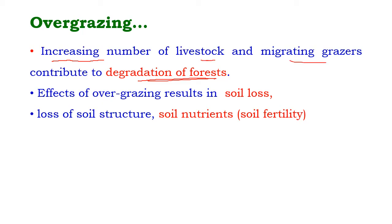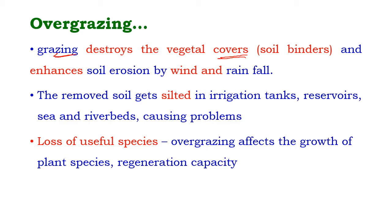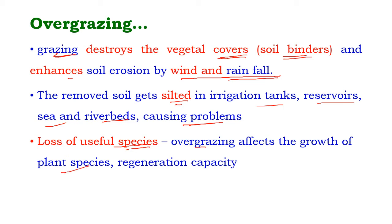The effects of overgrazing result in soil loss, loss of soil structure, and loss of soil nutrients — the fertility of the soil is lost. Grazing destroys vegetation cover, which acts as a soil binder and protects soil from erosion. Grazing also enhances soil erosion by wind and rainfall, and removed soil gets silted in irrigation tanks, reservoirs, and river beds. Overgrazing also affects the growth and regeneration capacity of plant species.